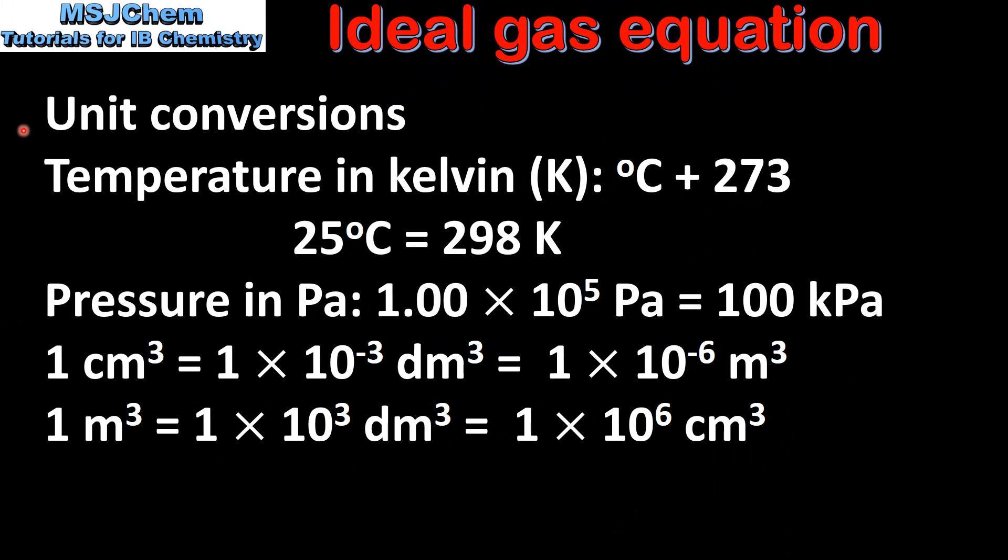And finally we look at some unit conversions when using the ideal gas equation. To convert from degrees centigrade to Kelvin you add 273. For example, 25 degrees C is equal to 298 Kelvin. Next is pressure: 1 times 10 to the 5 Pascals is equal to 100 kilopascals.